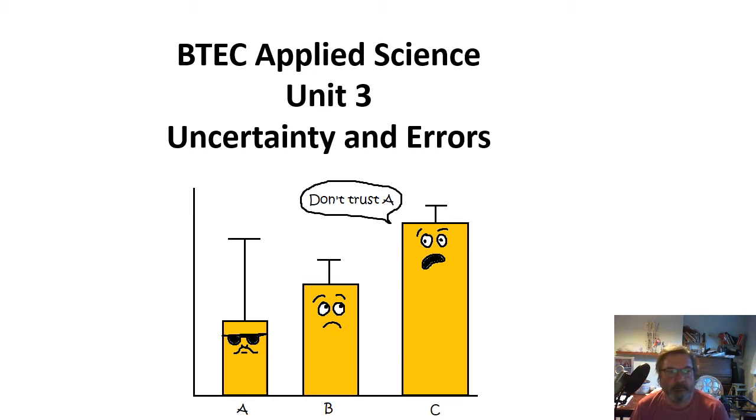BTEC applied science unit 3 and this video is about uncertainty and errors. What does uncertainty mean? How do we express uncertainty and the different types of error: systematic errors and random errors, and what we should do about them.